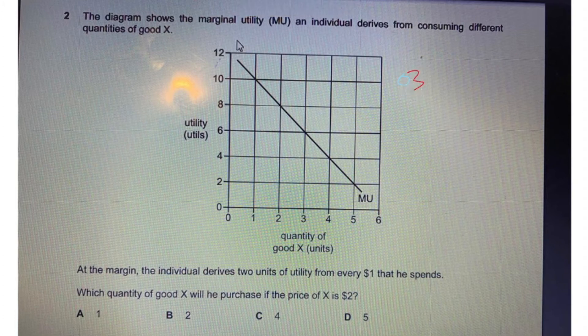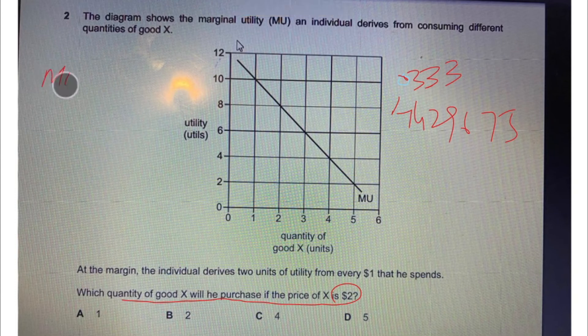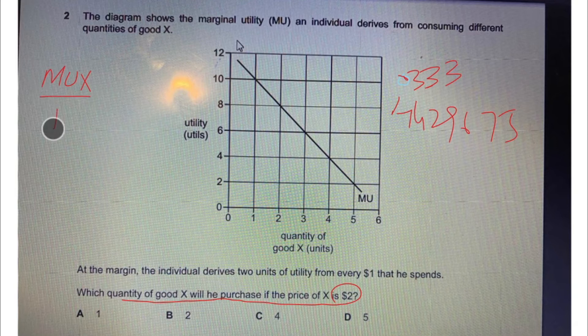To solve this question, use the formula: marginal utility of good X divided by price of X equals marginal utility of money. The question states that the marginal utility of one dollar is equal to 2.